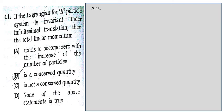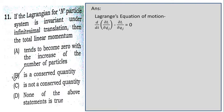Question number 11: if the Lagrangian for an n-particle system is invariant under infinitesimal translation, then the total linear momentum is conserved. We know the Lagrangian equation of motion is d/dt of ∂L/∂q̇_j minus ∂L/∂q_j equals zero.